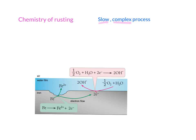The very first step of rusting begins when iron loses two electrons and becomes Fe2+. So the first product you have is Fe2+.